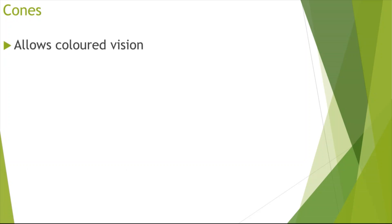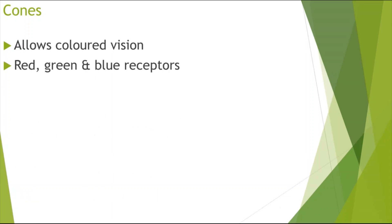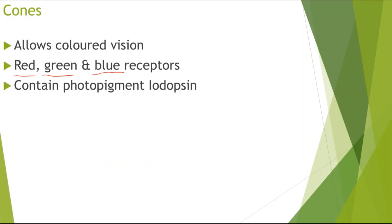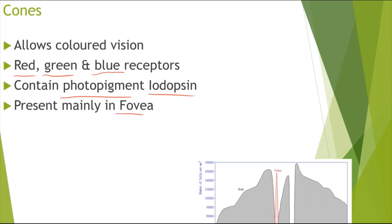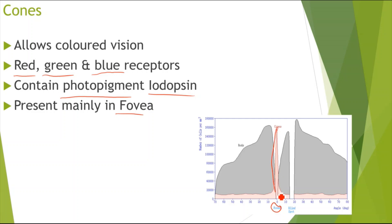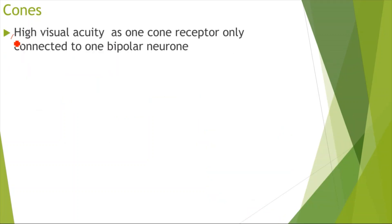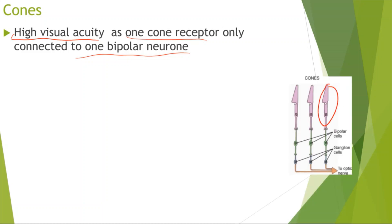Now looking at cone cells. Cone cells allow colored vision, whereas rod cells allow black and white vision. Cone cells have three receptors: the red receptor, the green receptor, and the blue receptor. They have the photopigment iodopsin, as mentioned before. They are mainly present in the fovea — as you can see in the diagram, there are large amounts in the fovea but very little cone cells elsewhere. Cones have high visual acuity because one cone receptor is only connected to one bipolar neuron.